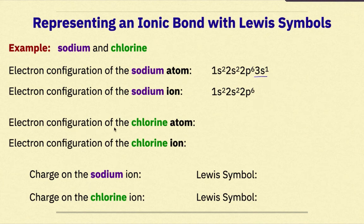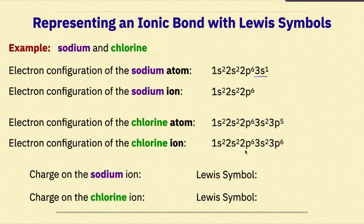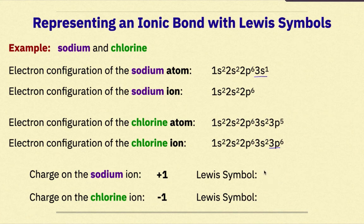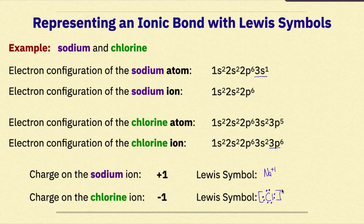In contrast, the electron configuration of the chlorine atom is 1s2, 2s2, 2p6, 3s2, 3p5. The electron configuration of the chlorine ion is 1s2, 2s2, 2p6, 3s2, 3p6, where the ion has gained 1 more valence electron than the atom. The charge on the sodium ion is +1 while the charge on the chlorine ion is -1. The Lewis symbol for the sodium ion is Na with a charge of +1, while the Lewis symbol for the chlorine ion is Cl with 7 valence electrons plus one additional valence electron, giving an overall charge of -1.